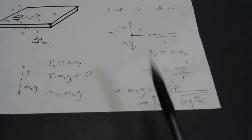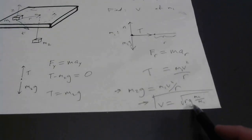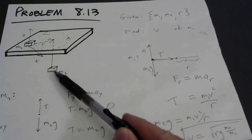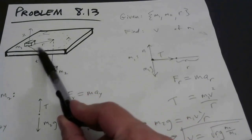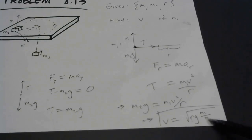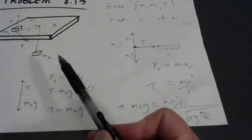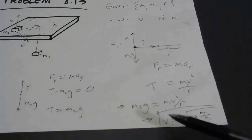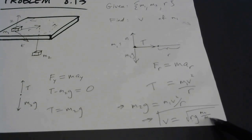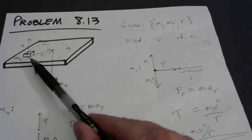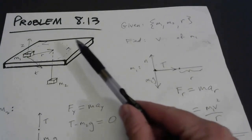Speed varies with the square root of r. If you were on a planet with stronger gravity, you'd have to go faster — the stronger the g-field, the harder the tension would have to pull on M2 to keep it from falling, so the faster M1 would have to orbit. And if M2 is really big compared to M1, M1 would have to move very fast. Conversely, if you just increase M1, the required speed goes down — it takes more tension to keep something massive moving in a circle.